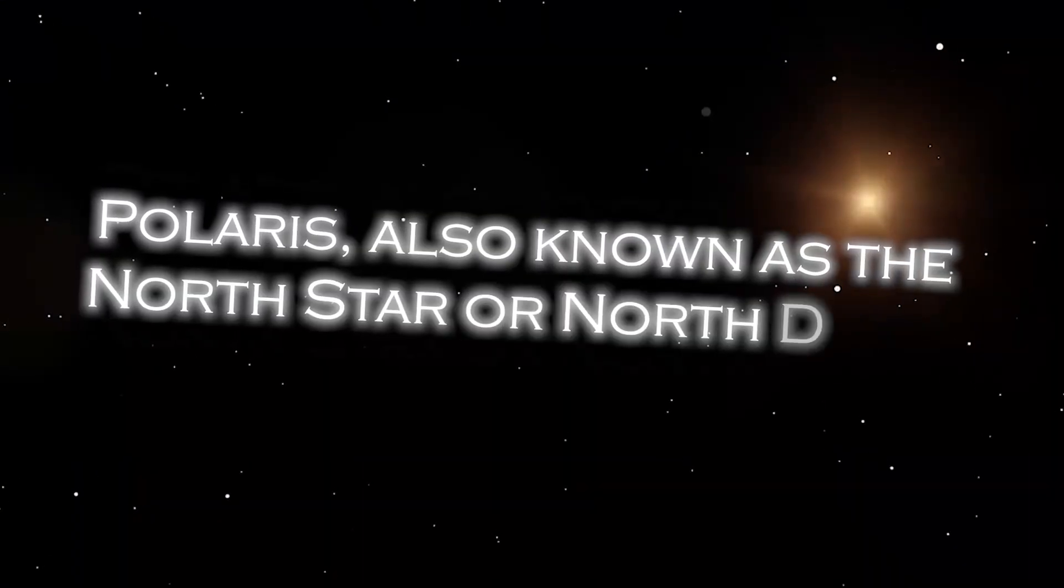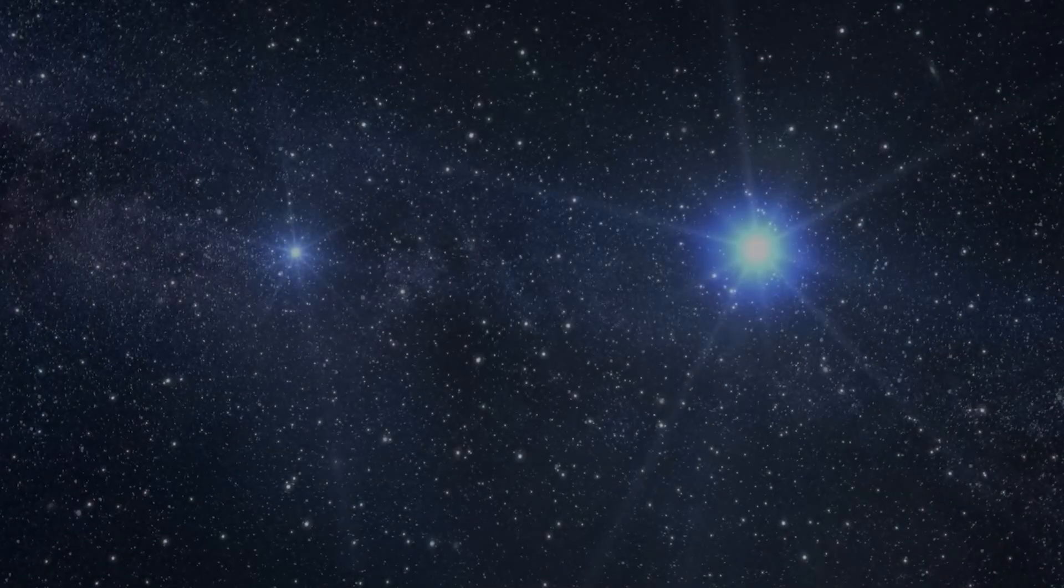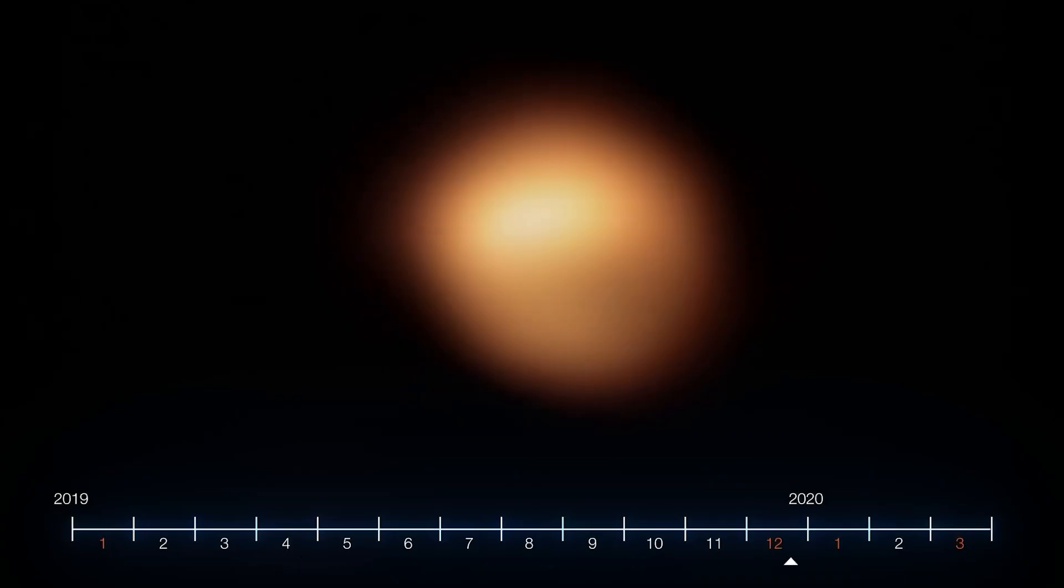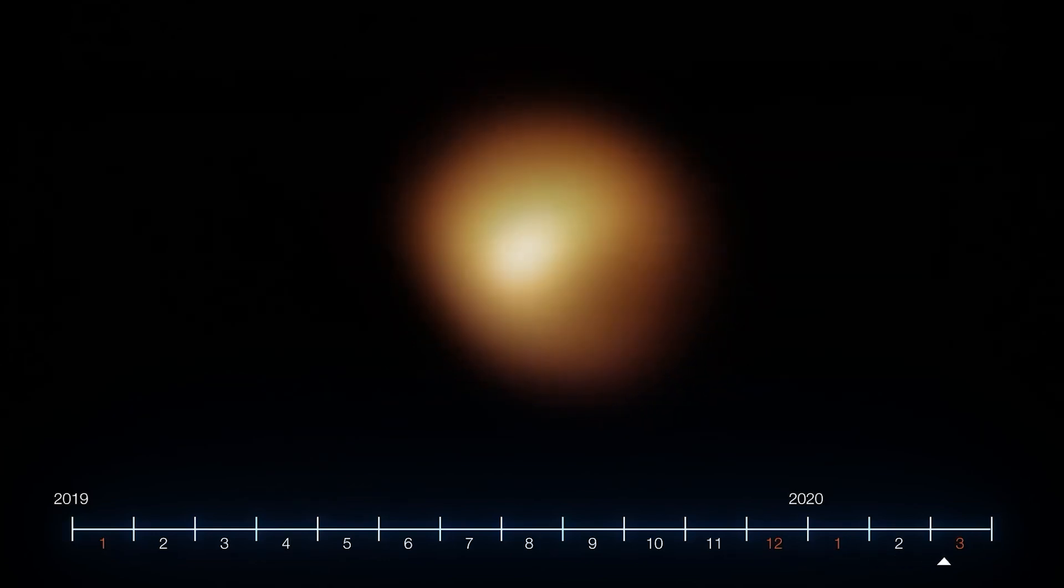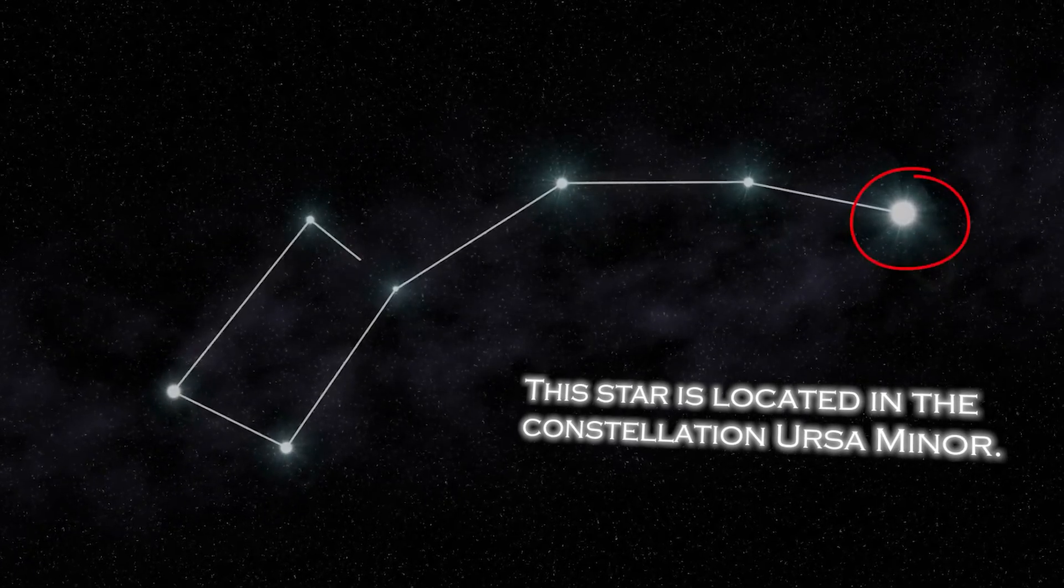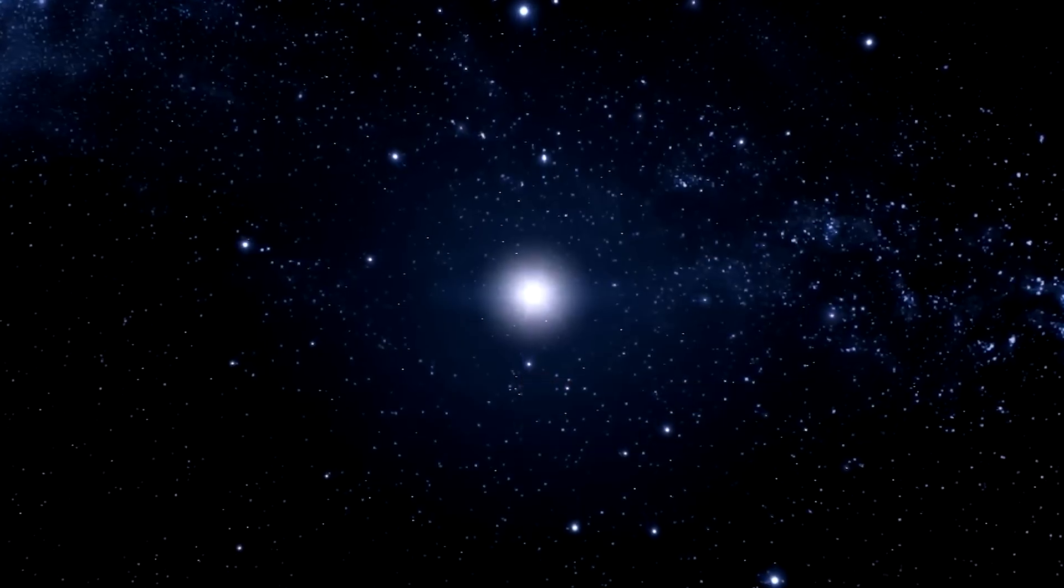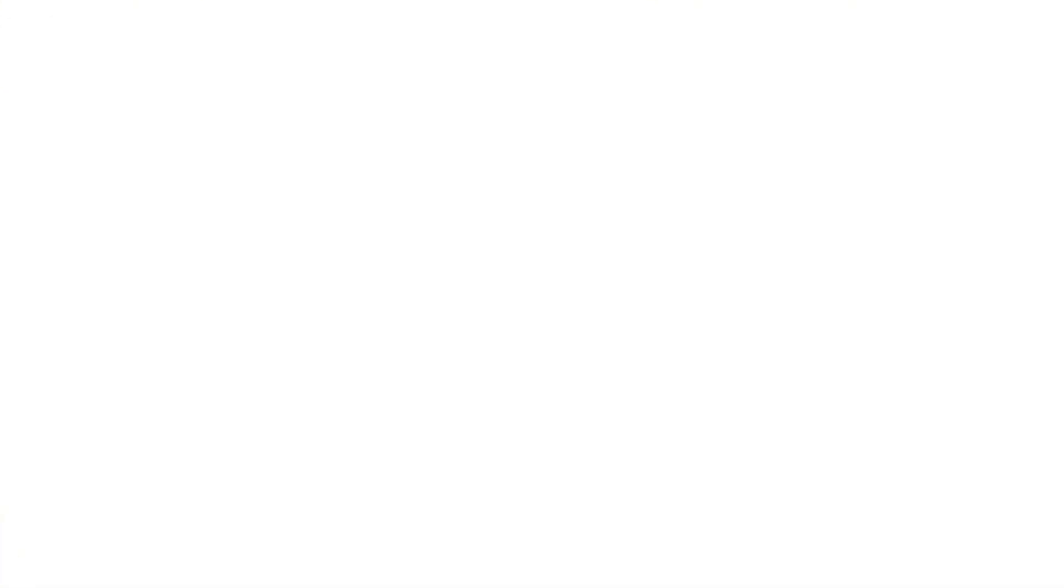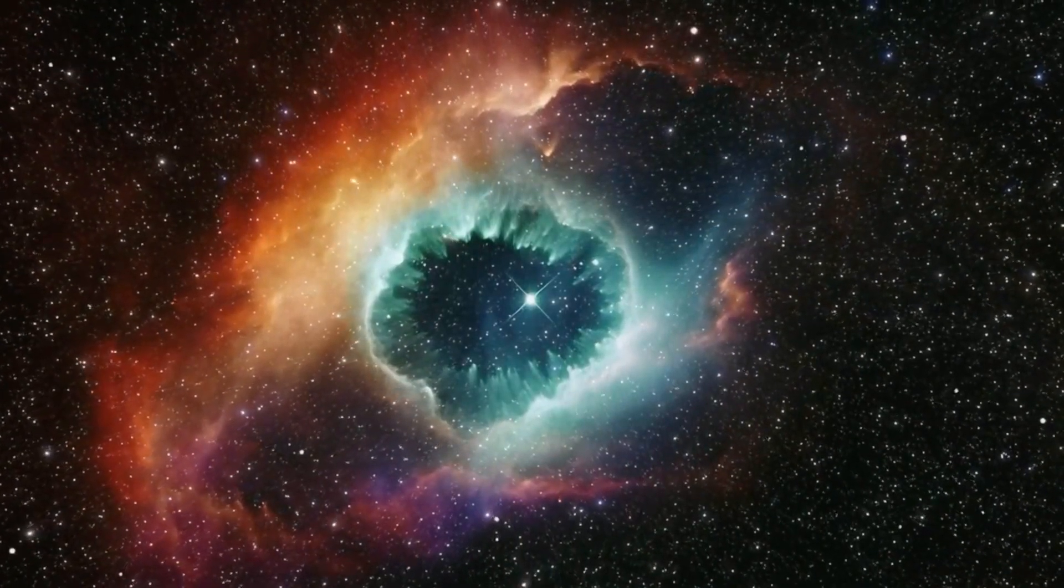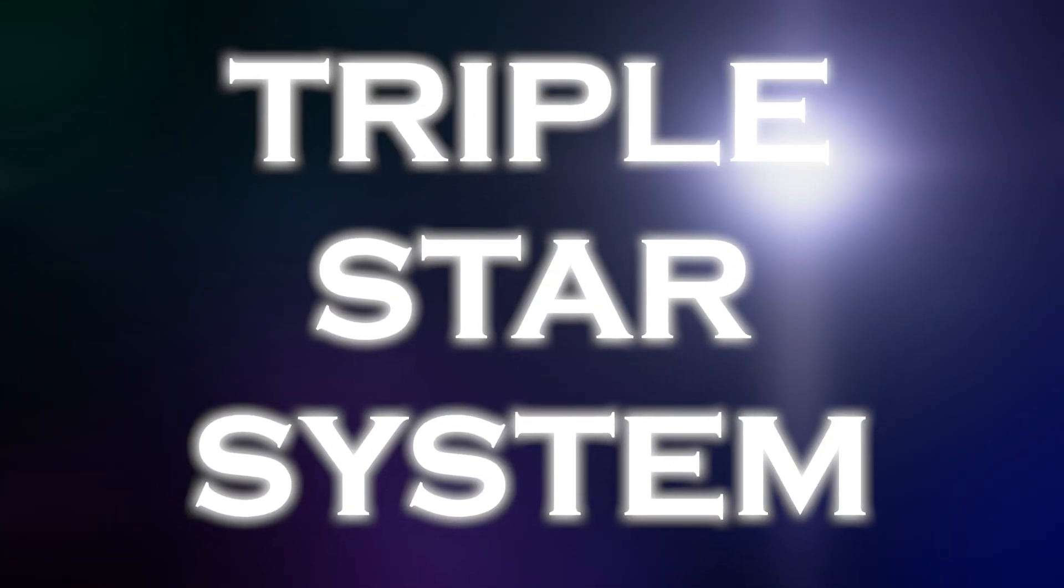Polaris, also known as the North Star or Pole Star, occupies a special position in the sky because of its proximity to the celestial North Pole. It is almost directly over the Earth's North Pole, which gives the illusion that it remains static in the northern sky. The star is located in the constellation Ursa Minor. Polaris is a star of moderate brightness that stands out as a yellow-white supergiant of considerable dimension compared to our Sun. Despite its appearance as a lone star, it is actually part of a rather complex triple star system.